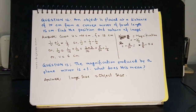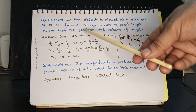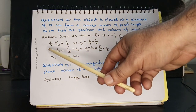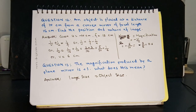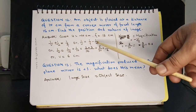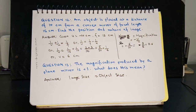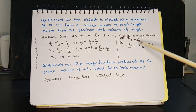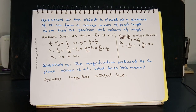Question 12: An object is placed 10 cm from a convex mirror of focal length 15 cm. Find the position and nature of the image. Here u = −10 cm and f = +15 cm (convex mirror). Using the mirror formula 1/v + 1/u = 1/f, we get v = 6 cm. Using the magnification formula m = −v/u = −6/−10 = 0.6, so the image is smaller than the object, virtual, and erect.